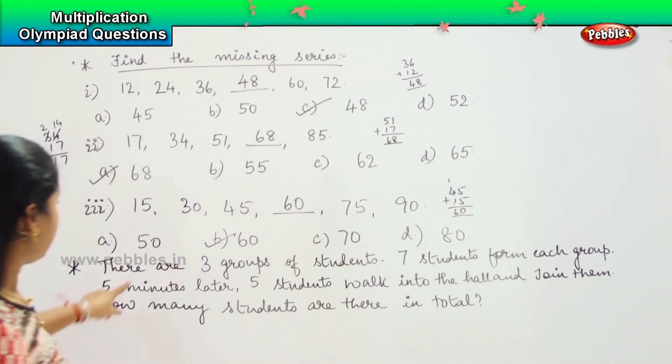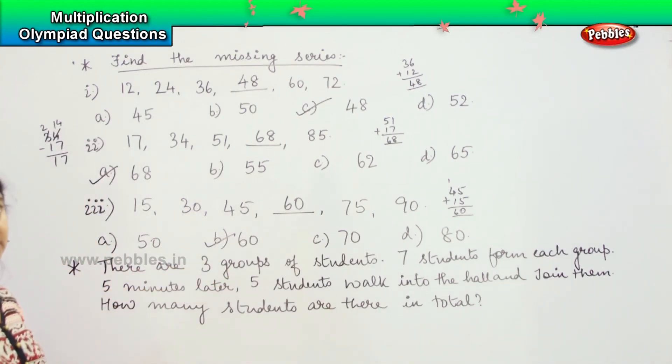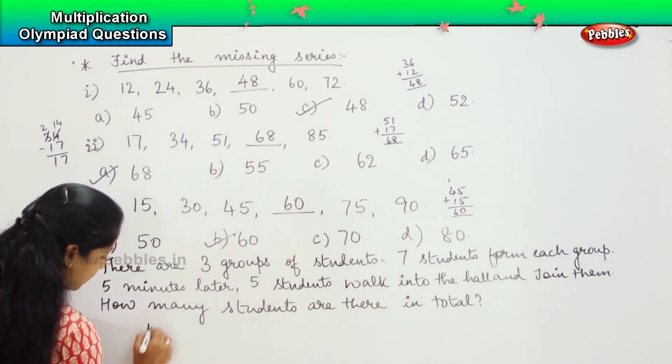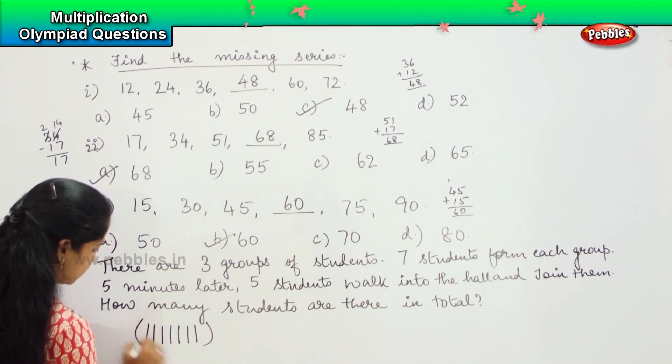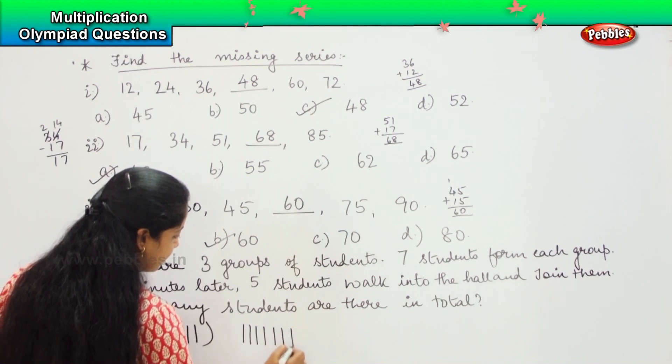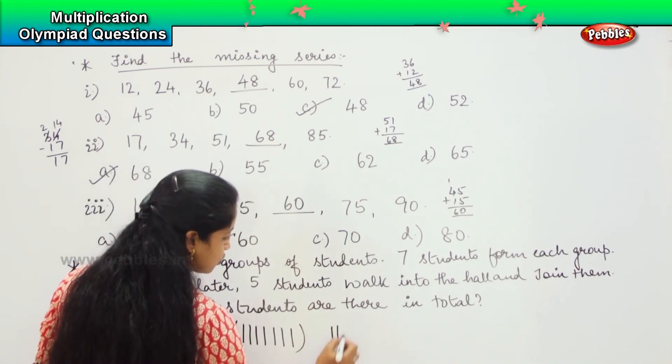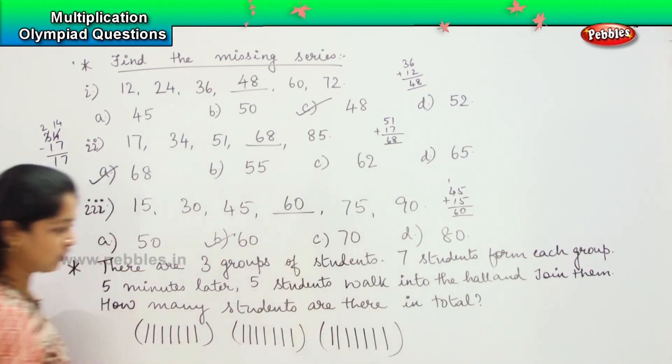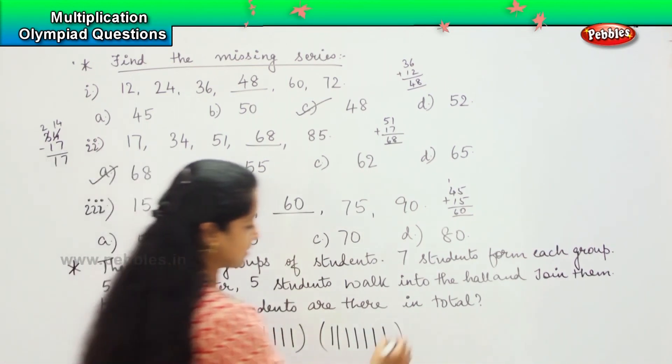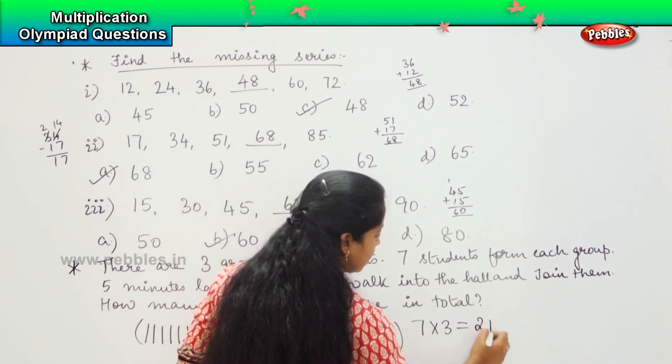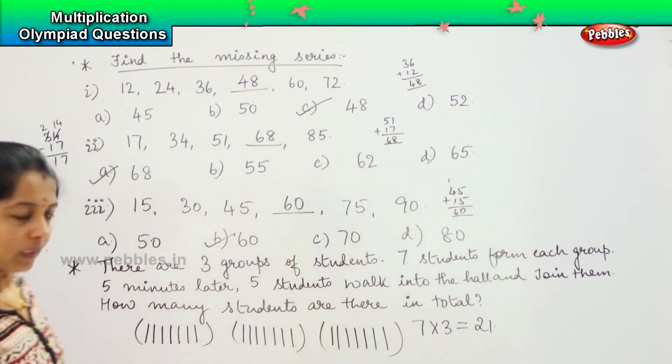Did you understand the question? There are 3 groups of students, and 7 students form each group. So 1, 2, 3, 4, 5, 6, 7. This is group 1. 1, 2, 3, 4, 5, 6, 7. This is group 2. This is group 3. So which means that 7 into 3, which is nothing but 21.